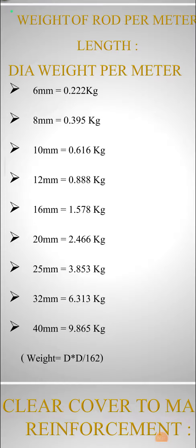In this video, today we will discuss about weight of rod per meter length. The formula is D square by 162.2, in kg.